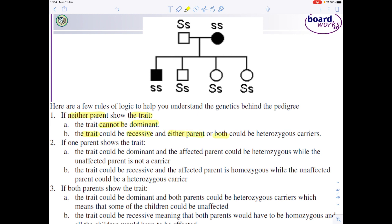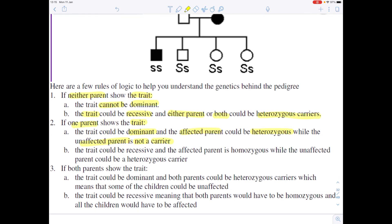If one parent shows the trait, the trait could be dominant and the affected parent could be heterozygous while the unaffected parent is not a carrier. If one parent shows the trait, then we could infer that the trait is recessive, that the affected parent is homozygous while the unaffected parent could be a heterozygous carrier.